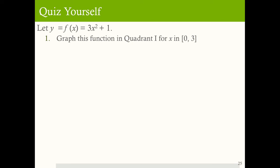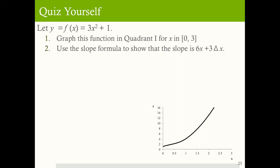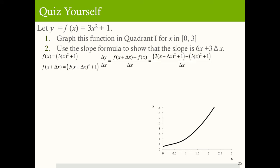First, graph this function in quadrant 1 for x between 0 and 3. This is a quadratic, upward sloping, with a vertical intercept of 1. Second, use the slope formula to show the slope equals 6x plus 3Δx. Define f(x) and f(x + Δx), plug into the slope formula, and after expanding and simplifying, you get 6x plus 3 times Δx — which is the expected result.